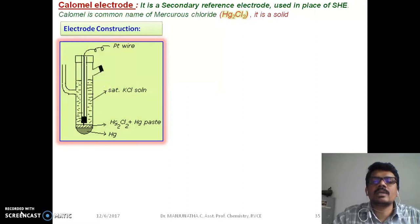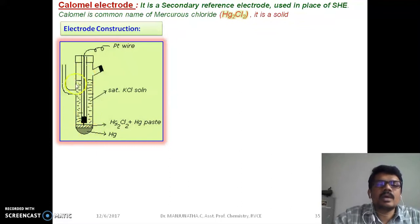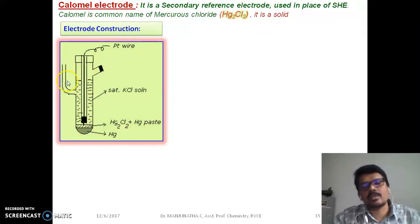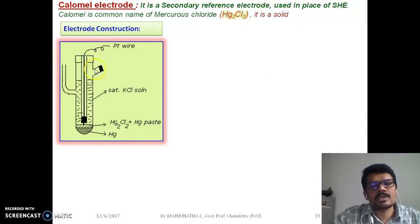Let us look at the construction of calomel electrode. This consists of a glass tube having a side tube connecting to salt bridge and another side tube to fill potassium chloride solution.